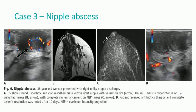Nipple abscess: patient presented with right milky nipple discharge. Ultrasound shows a round, isoechoic and circumscribed mass with vessels in rim. On MRI, the mass is hyper-intense on T2 with a complete rim enhancement on MIP image. The patient received antibiotics and complete lesion resolution was noted after 10 days.